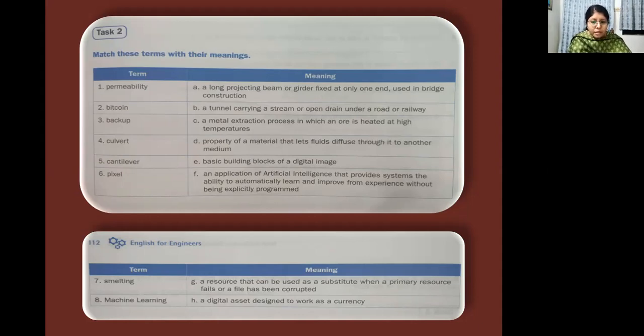Next, you have backup. Backup. So where do you have the answer or the matching for backup? It is again G, a resource that can be used as a substitute when a primary resource fails or a file has been corrected. Next, you have culvert. What is the matching or the meaning of culvert? Culvert? You have B there, a tunnel carrying a stream or open drain under a road or railway.